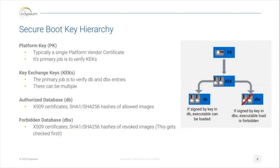When vulnerabilities are found or someone introduces a vulnerability in a bootloader that allows an attacker to bypass the Secure Boot process, what will happen is that hash — of software like GRUB, for example — will be put into the DBX. When your system is booting with Secure Boot, one of the first things it does is check the DBX to make sure that the software being used in Secure Boot has not been revoked. The DBX is a revocation list.